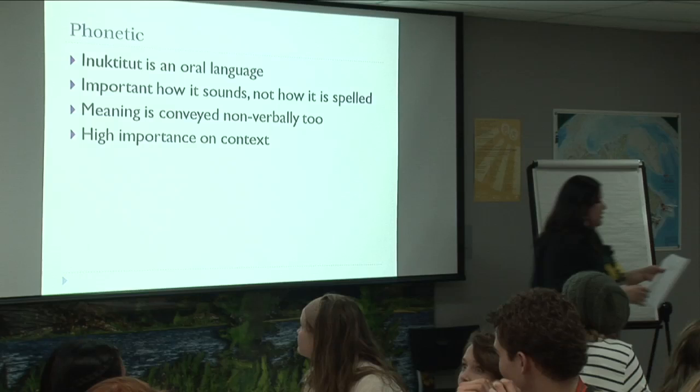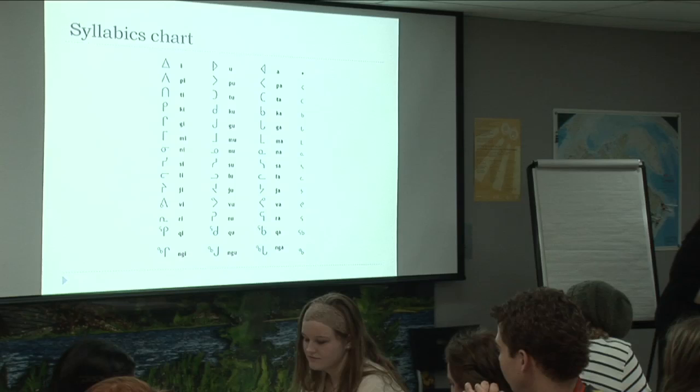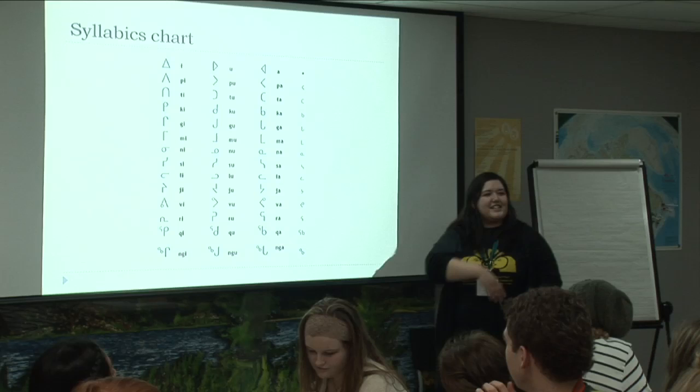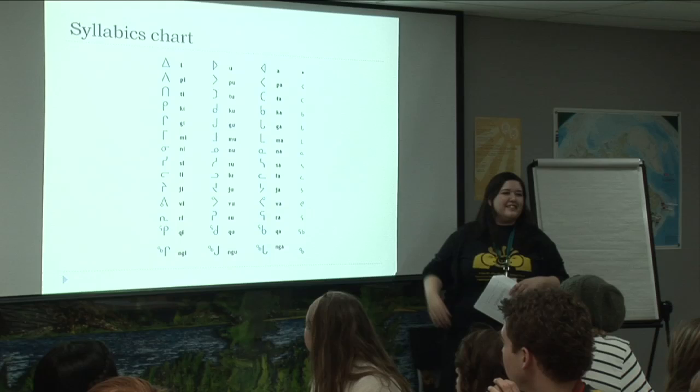What do people notice about the syllabics in front of them? There are letters missing. Yeah, you don't need all those extra letters — you don't need all those extra vowels. We have I, U, A. Those are the vowels.